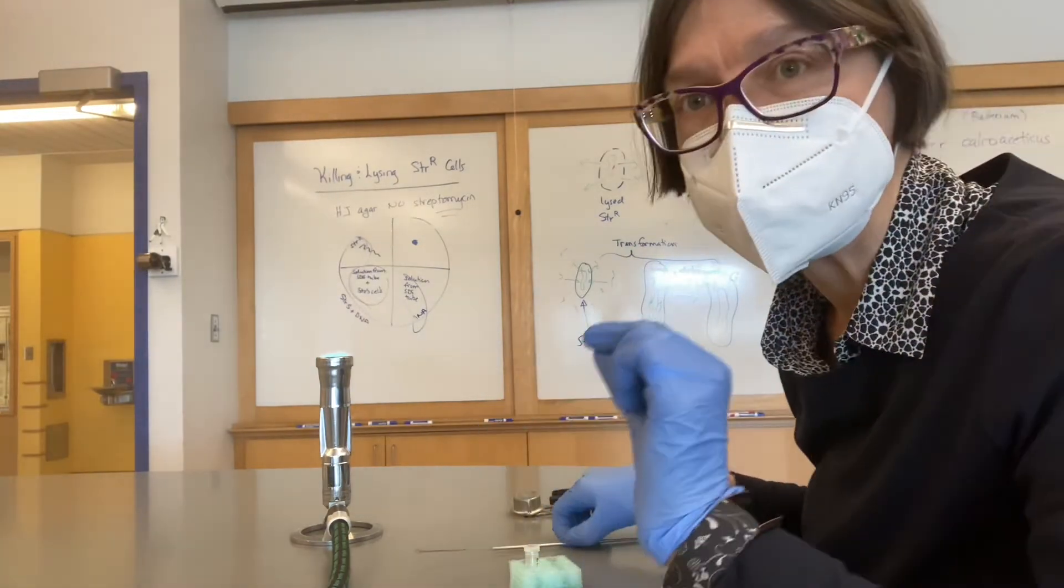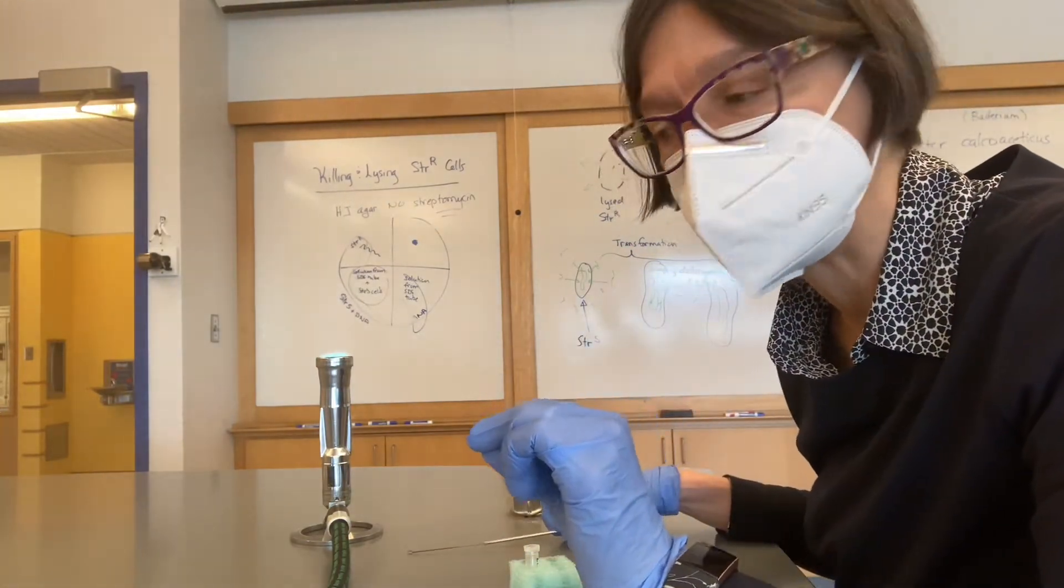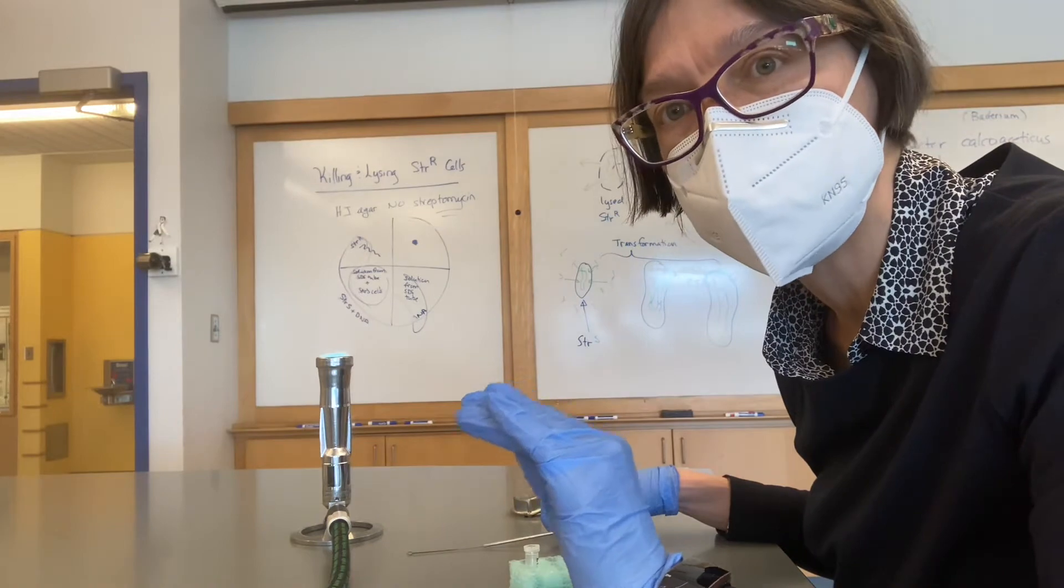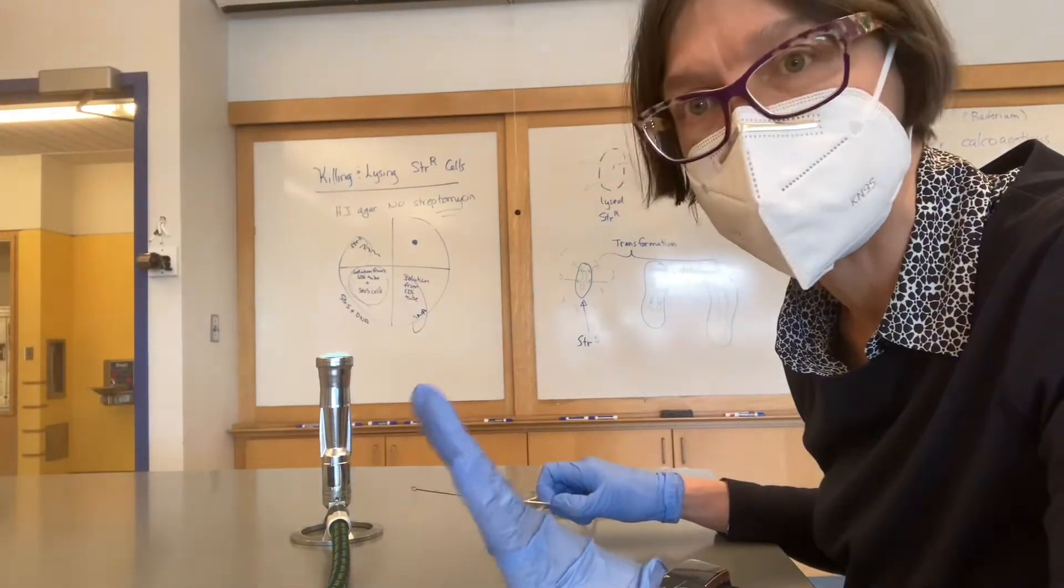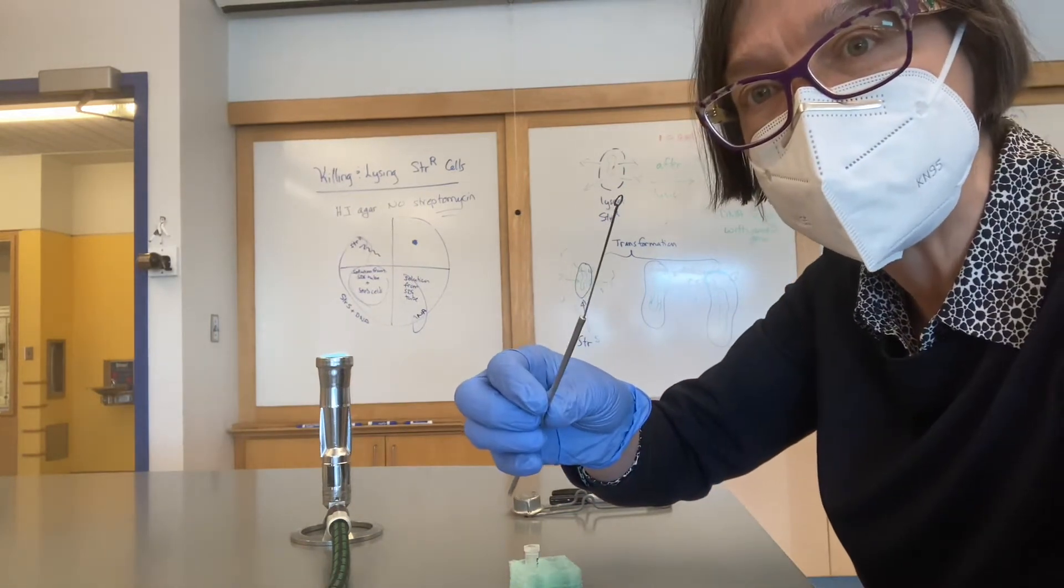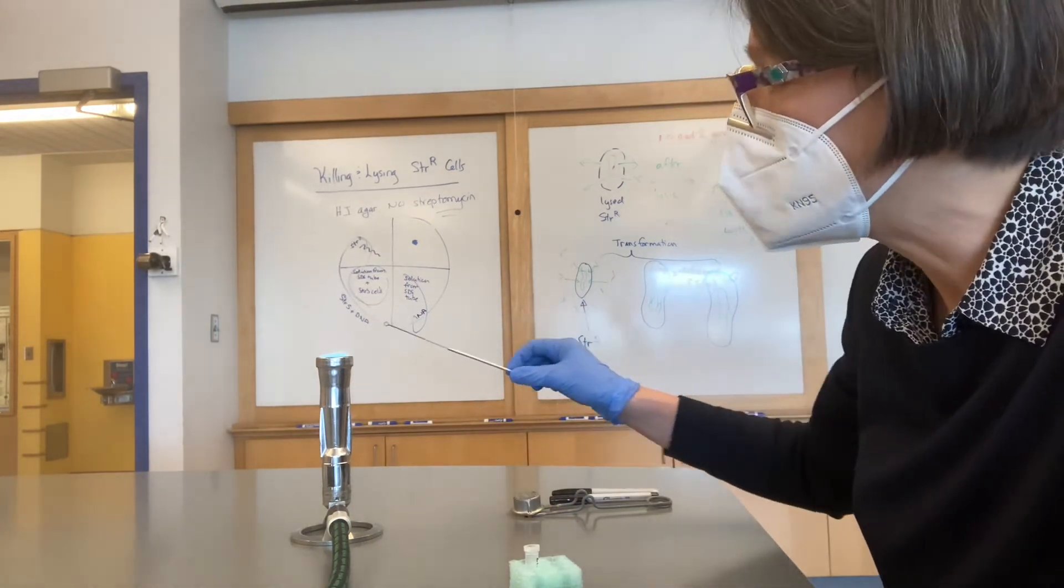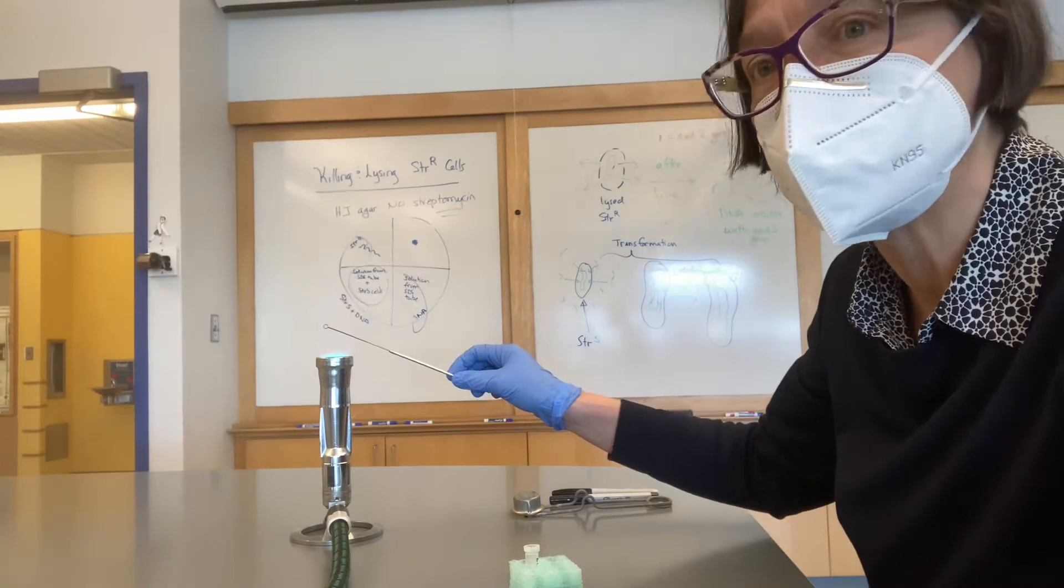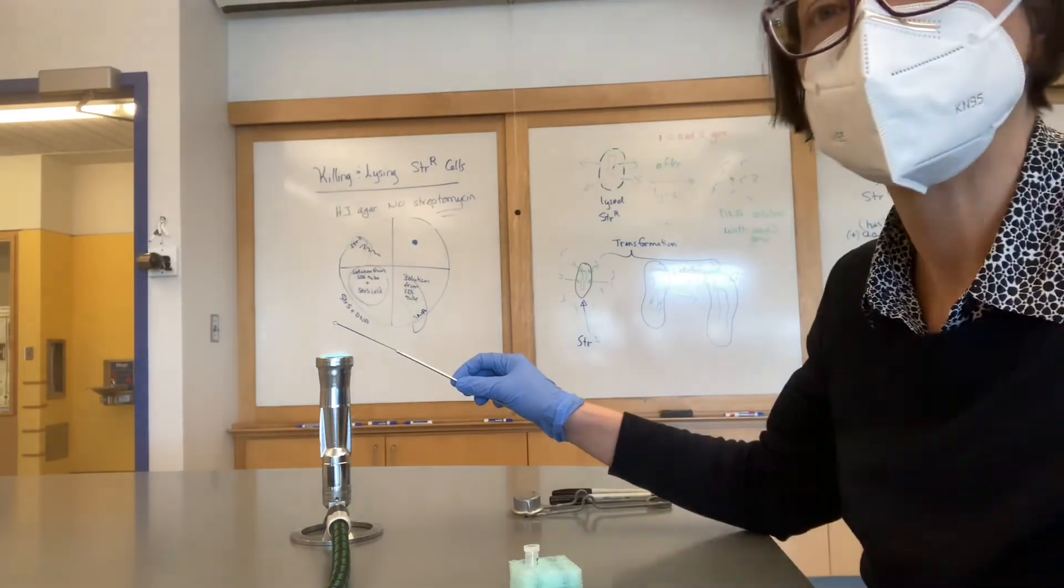This is so I can use aseptic technique, which means I'm not introducing any new organisms into anything at all, keeping things just as they are now. I'm going to flame my inoculating loop, which I do by holding it in the Bunsen burner until it is red hot.